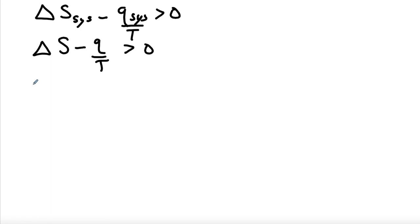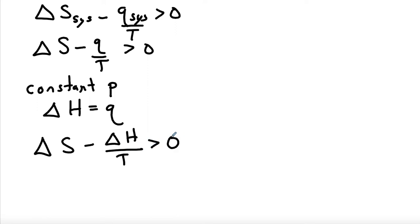Now we often work at constant pressure. If you think about working in any kind of open vessel like a test tube or a beaker, the pressure imposed on the system is just whatever atmospheric pressure happens to be that day. And if we're at constant pressure, we know that delta H is equal to Q. So we can make that substitution: delta S minus delta H over T must be greater than zero for a process to be spontaneous.